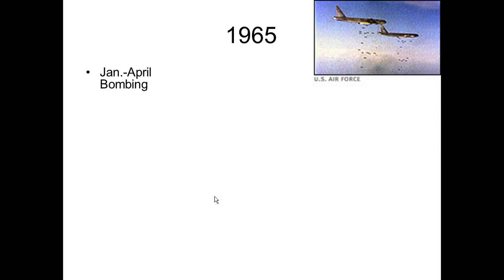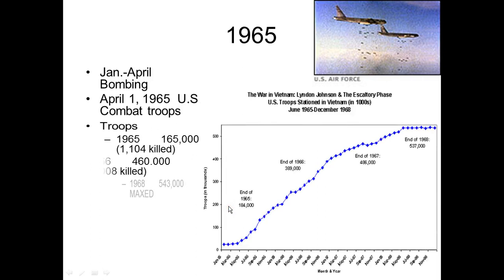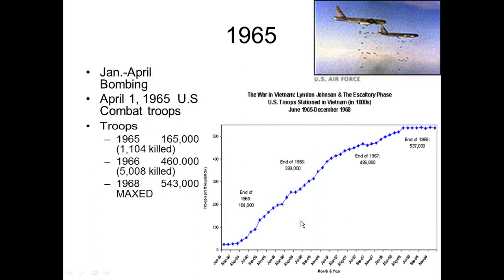From January through April we began bombing North Vietnam using B-52s. By April 1965 we sent our troops — about 3,500 arrived at the beginning of April. You can see how quickly this escalated: by November 1965 we had 165,000 troops with over 1,000 killed. In 1966 we had over 460,000 with 5,000 killed that year. We maxed out in 1968 with 543,000 troops.